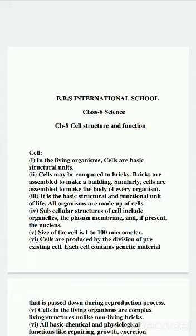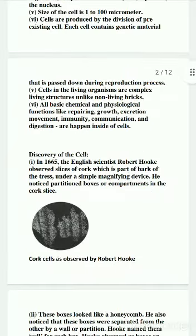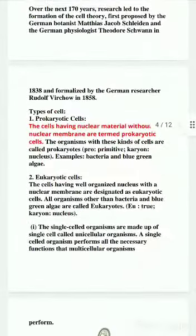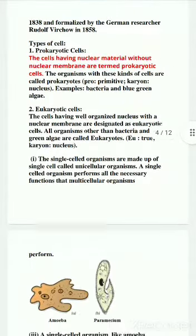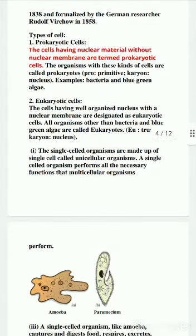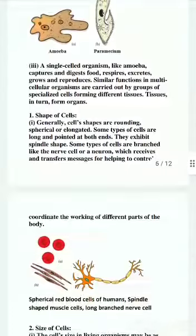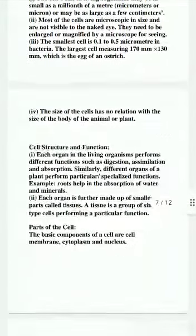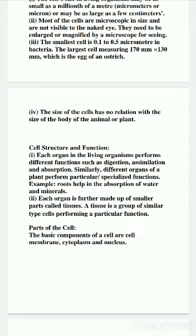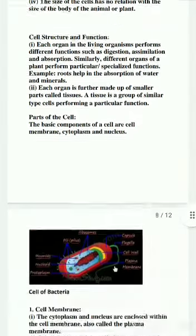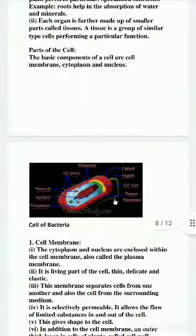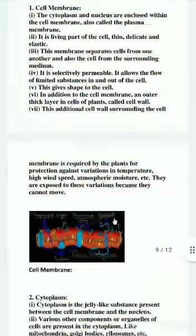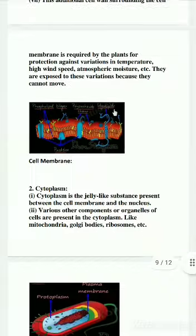We have discussed about the cell, we have discussed about the discovery of the cell, then we have discussed about the types of cell — that is the prokaryotic cells and the eukaryotic cells. We have also discussed about the shape of the cell, size of the cells, then different structures of the cell and their function, parts of the cell like cytoplasm, nucleus, cell membrane, and what is cell membrane, what is nucleus, what is cytoplasm.